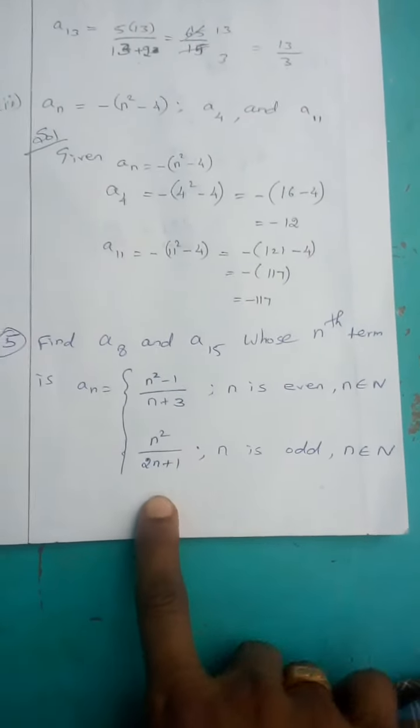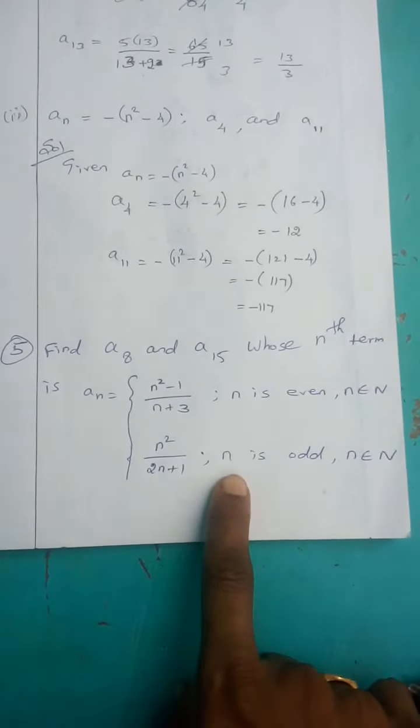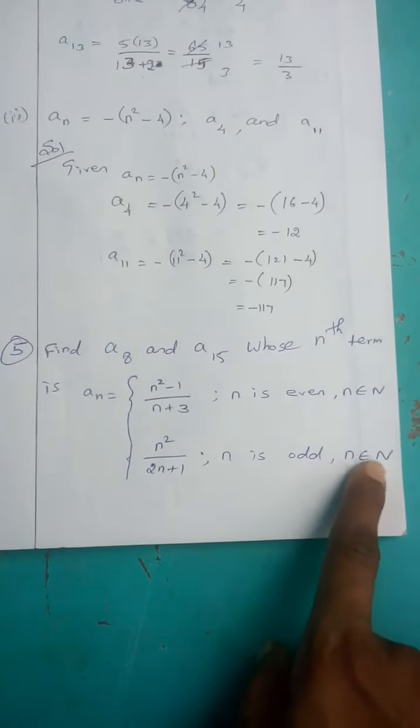Next, AN equals n squared divided by 2n plus 1, when n is odd, n belongs to N.